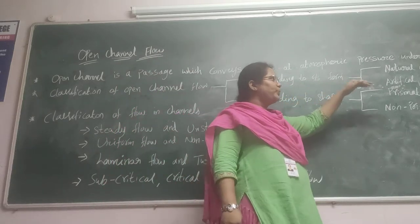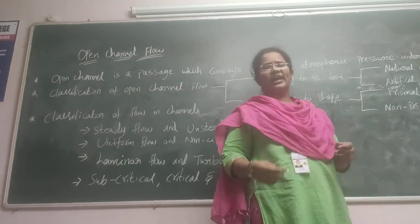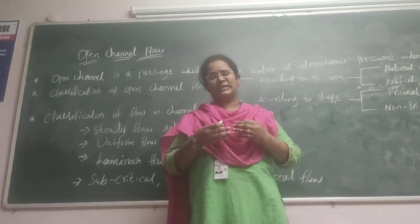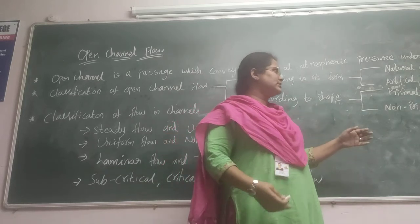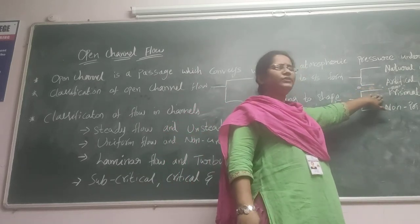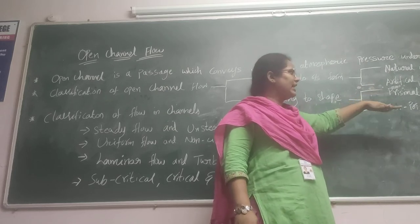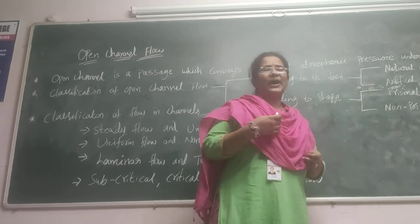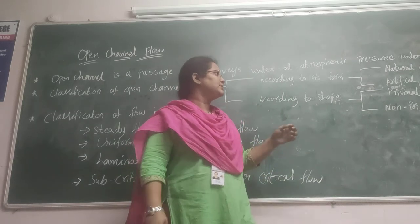Coming to Prismatic Channel. Prismatic Channel is known as having a regular shape and cross section. For example, Prismatic Channels include Rectangular, Trapezoidal, Triangular, and Parabolic Circular Channels.